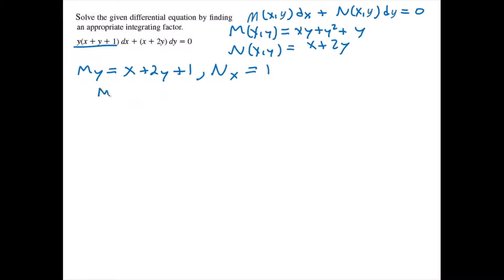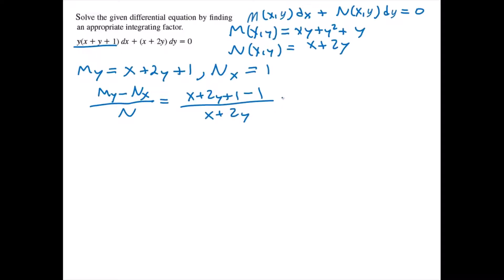Finding the difference My minus Nx divided by N, we get (x plus 2y plus 1 minus 1) divided by (x plus 2y), which simplifies to 1. Since this is only a function of x, our integrating factor is e to the integral of 1 dx, giving us e to the x.